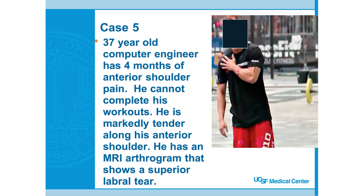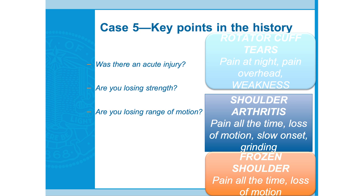Case five: 37-year-old computer engineer with four months of anterior shoulder pain — note: anterior. He cannot complete his workouts, is markedly tender along the front of his shoulder, and has an MRI arthrogram showing a superior labral tear. Running the algorithm: no acute injury, more overuse. Not losing strength. Not losing range of motion. This falls into the impingement category and requires a detailed history and exam to sort out.